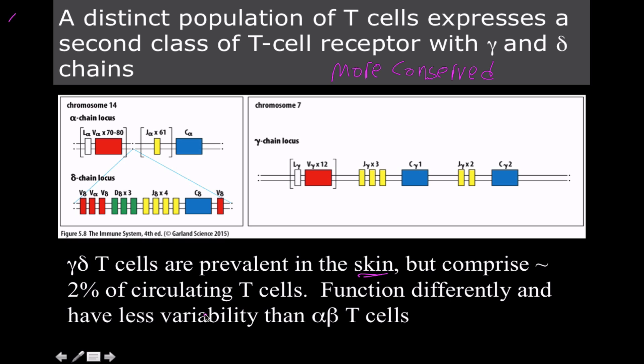These are really prevalent in the tissue spaces, predominantly the skin, but as far as circulating the bloodstream and lymphatic ducts goes, that is more or less alpha and beta. They have very different functions and they have much less variability because they're more conserved.